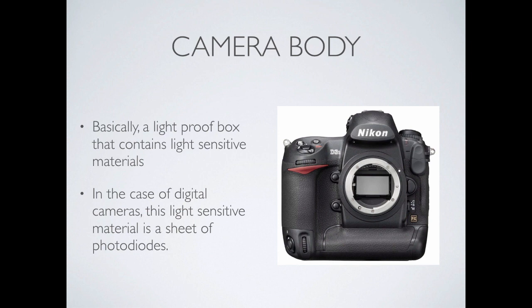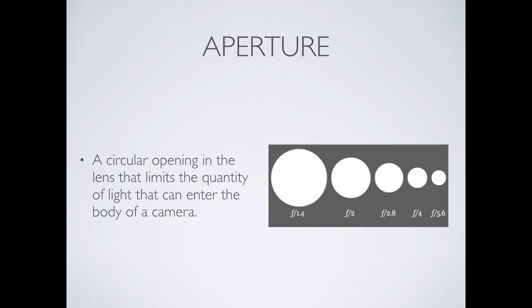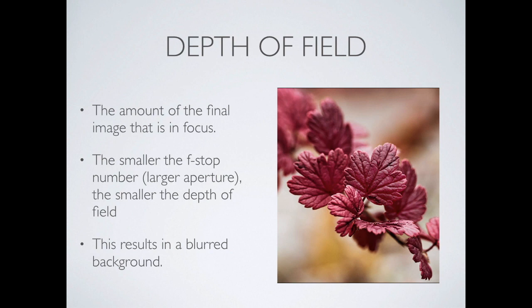Aperture is the circular opening in the lens that lets light into the camera body. This applies whether you're on a digital SLR like a wedding photographer or using your phone — it's the amount of light that can get into the camera based on how open that lens is. Depth of field is the amount of the final image that's actually in focus. The smaller the f-stop number, the larger the aperture, the more light comes in, and the narrower the depth of field.